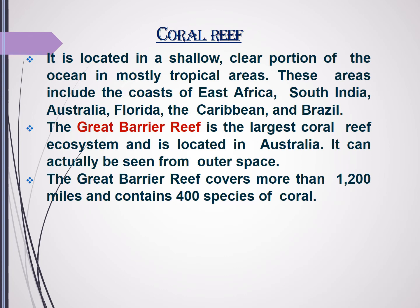Next we will talk about coral reefs. Coral reefs are located in shallow, clear portions of the ocean, mostly in tropical areas, including the coasts of East Africa, South India, Australia, Florida, the Caribbean, and Brazil. The Great Barrier Reef is the largest coral reef ecosystem, located in Australia, and can actually be seen from outer space. It covers more than 1,200 miles and contains 400 species of corals.